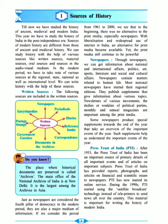Some newspapers produce special supplements towards the end of the year that take an overview of the important events of the year. Such supplements help us understand the important events of the year. For example, in November and December, magazines and newspapers publish events which took place throughout the entire year — like a year-in-review.